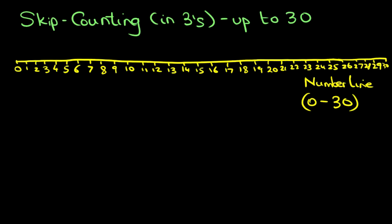It's from 0 on the left and it goes across to 30. That is our number line from 0 to 30.